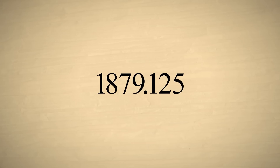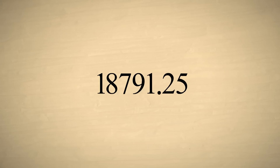The net effect is that the decimal point moves. For example, if we multiply a number times ten to the second power, the decimal point moves two columns to the right. Or, if we multiply a number by ten to the negative fifth power, the decimal point moves five columns to the left.